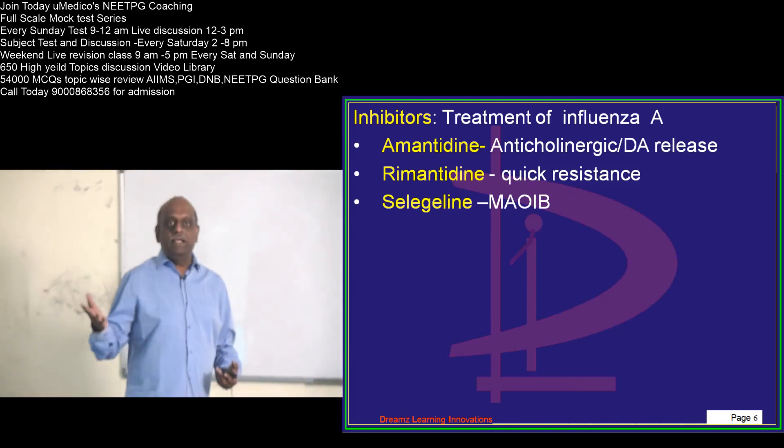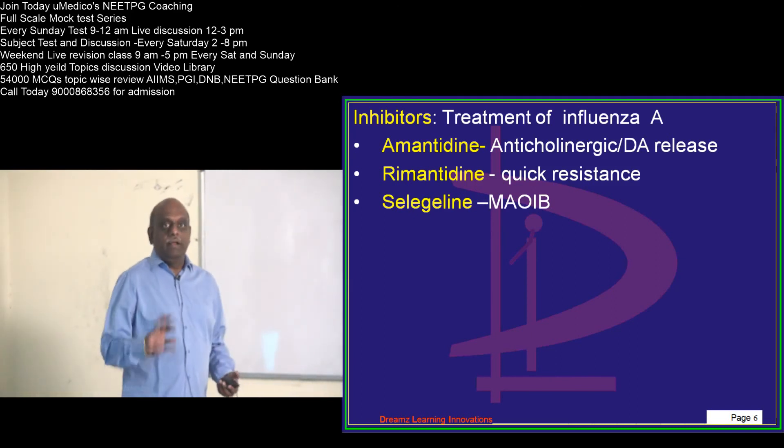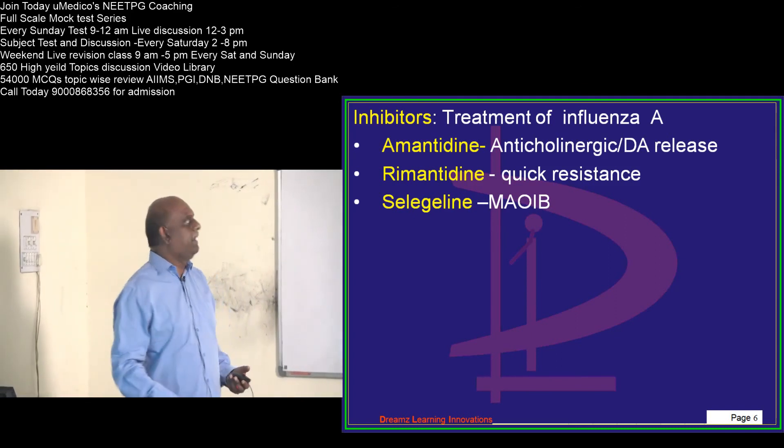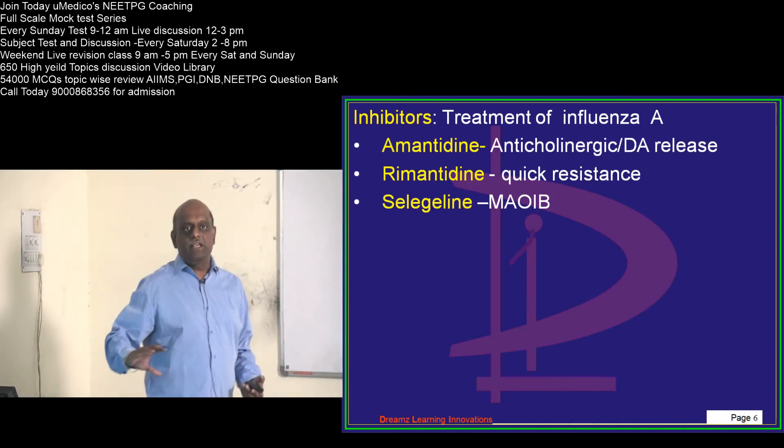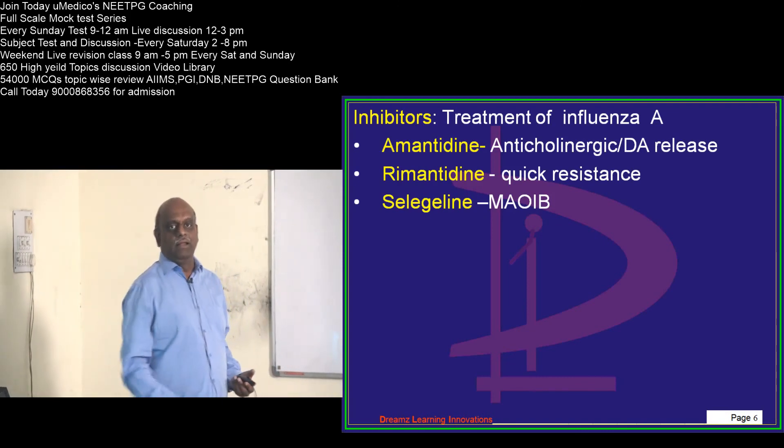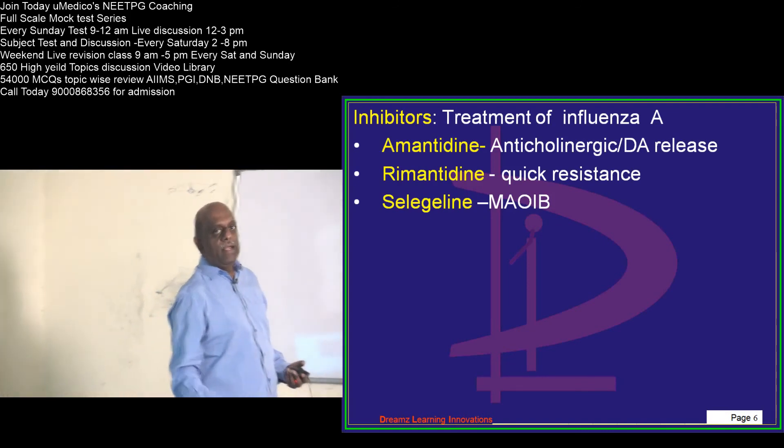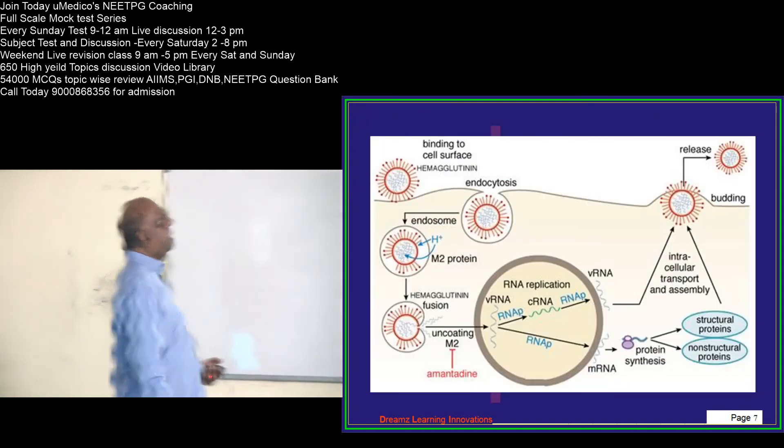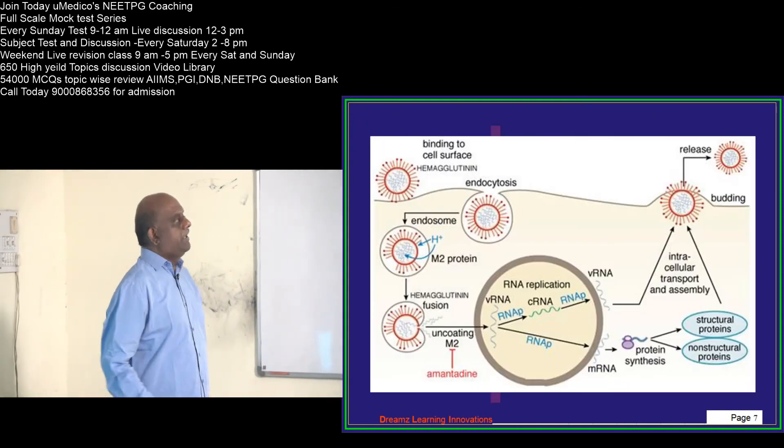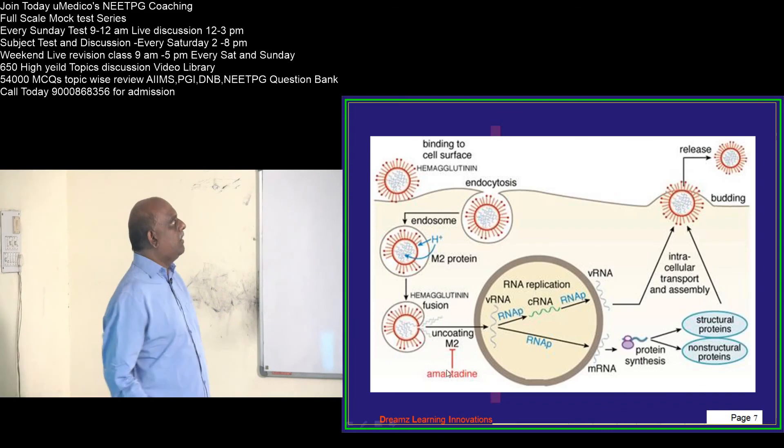Rimantadine also has anticholinergic property. Unfortunately, quick resistance developed. Selegiline is an example of a MAO inhibitor, MAO-B inhibitor, but they are also used in influenza A treatment. This gives you a quick summary of what we are talking about.